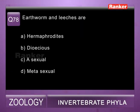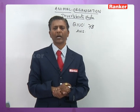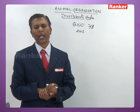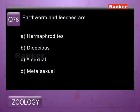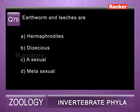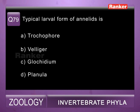Question seventy-eight: earthworms and leeches are — a) hermaphrodite, b) dioecious, c) asexual, d) metasexual. Both leeches and earthworms are hermaphrodite or monoecious. So the answer for seventy-eighth question is a.